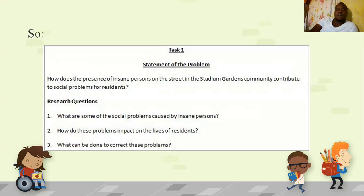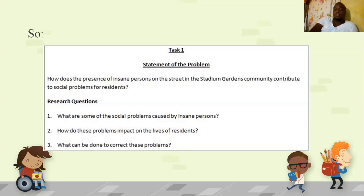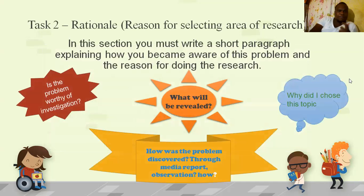Here is an example: 'How does the presence of insane persons on the street in the Stadium Gardens community contribute to social problems for residents?' — that is the statement of problem, in the form of a question. Then three research questions: one — what are some of the social problems caused by insane persons; two — how do these problems impact the lives of residents; three — what can be done to correct these problems. That covers cause, effect, and solution.